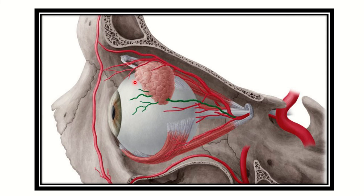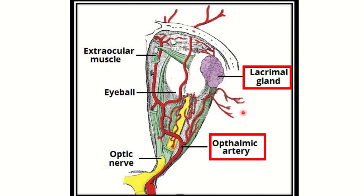In this picture we can see the orbital cavity, the eyeball, and the lacrimal gland. We can see an artery supplying the lacrimal gland, and this artery is arising from the internal carotid artery and passes through the optic canal.